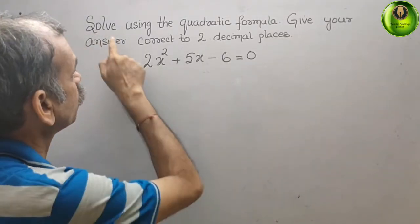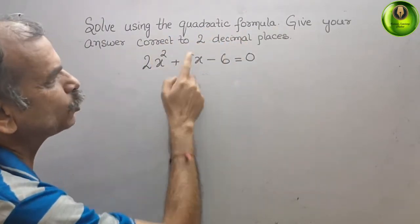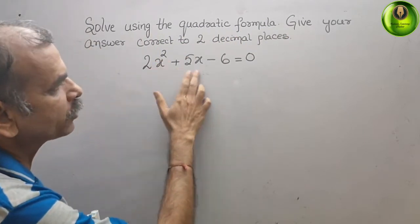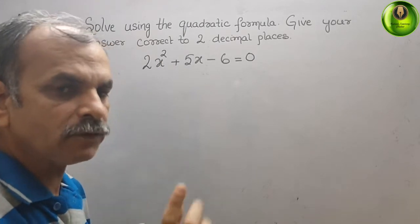Your question is solve using the quadratic formula, give your answer correct to two decimal places. So they have given you 2x² + 5x - 6 = 0. First we will write the standard form of quadratic equation.